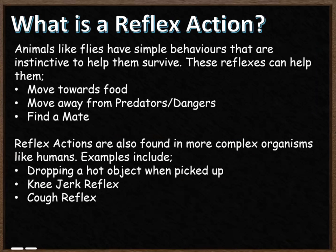We also have reflex actions found in more complex organisms like humans. Some examples include dropping a hot object when you pick it up, the knee jerk reflex, and the cough reflex, amongst many others. These are all involuntary reflexes, so they don't require you to think about them. For example, if you pick up something really hot you're going to drop it automatically, and that behaviour is there to help prevent you from being harmed.